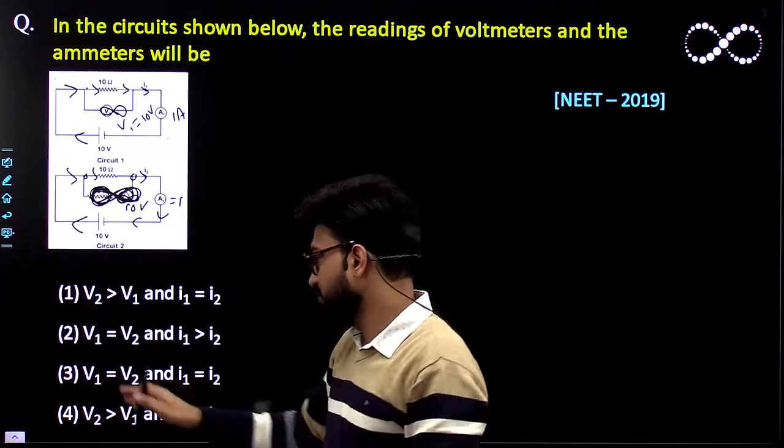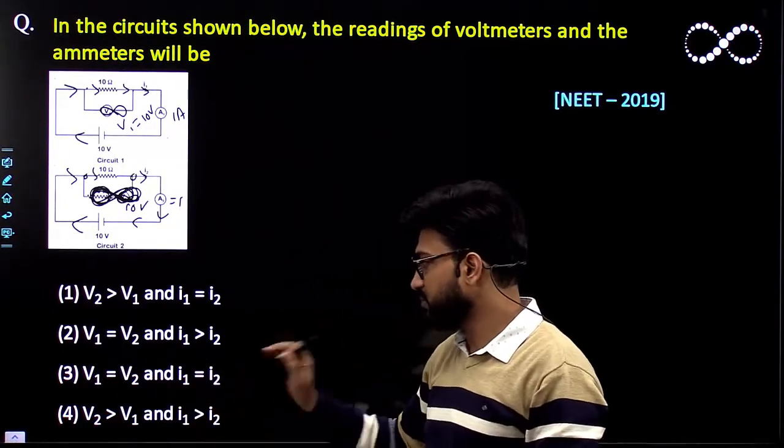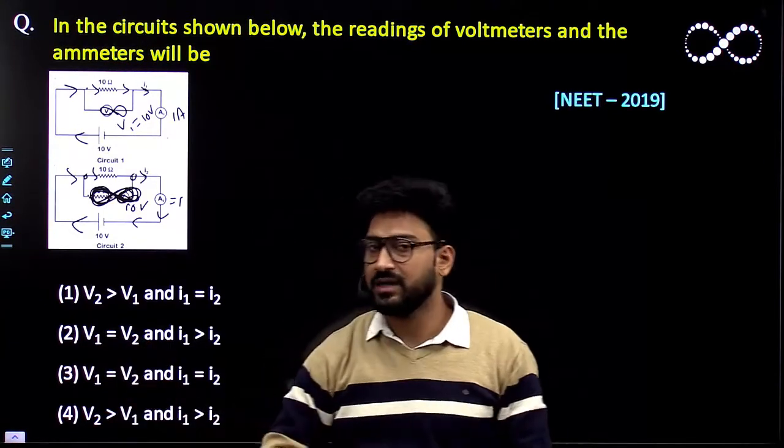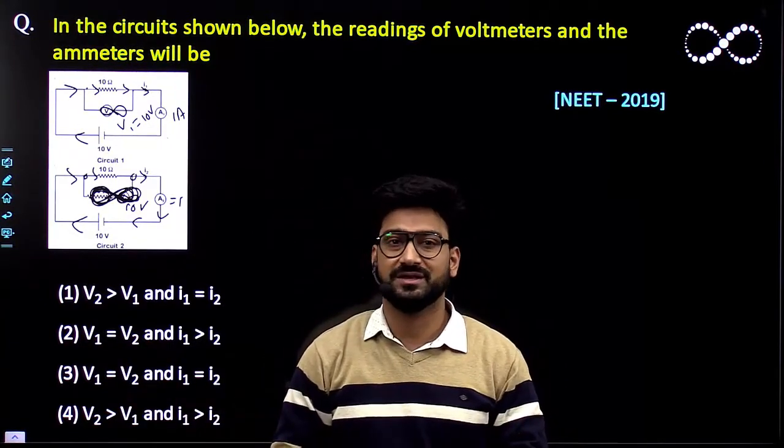So that means the answer would be V1 is equal to V2 and I1 is equal to I2. So the third option would be the correct option that you should get. I hope this question is clear to everyone. Thank you.